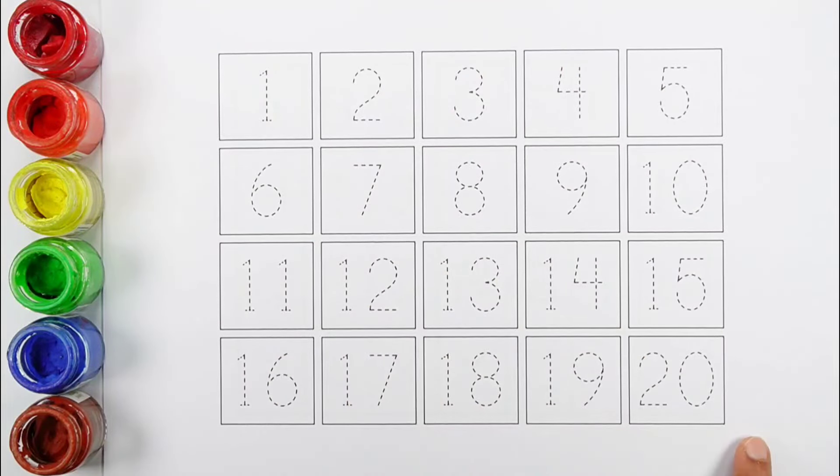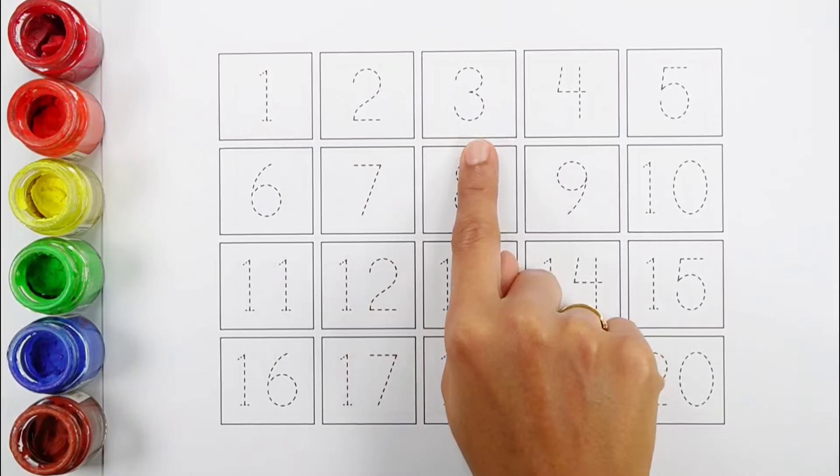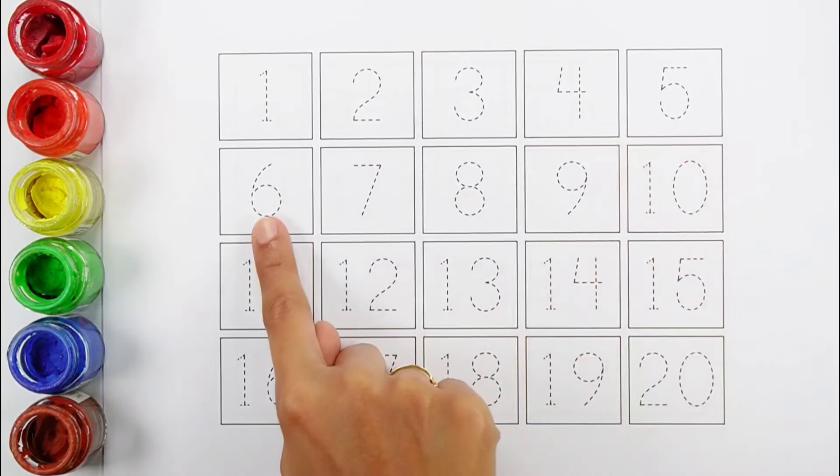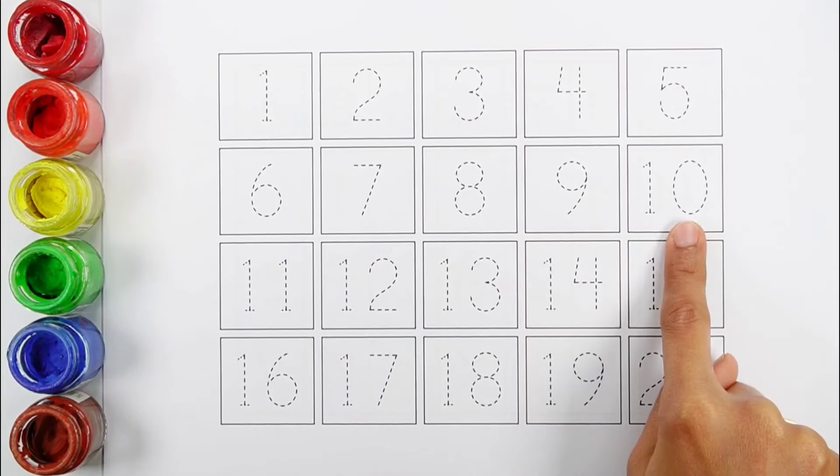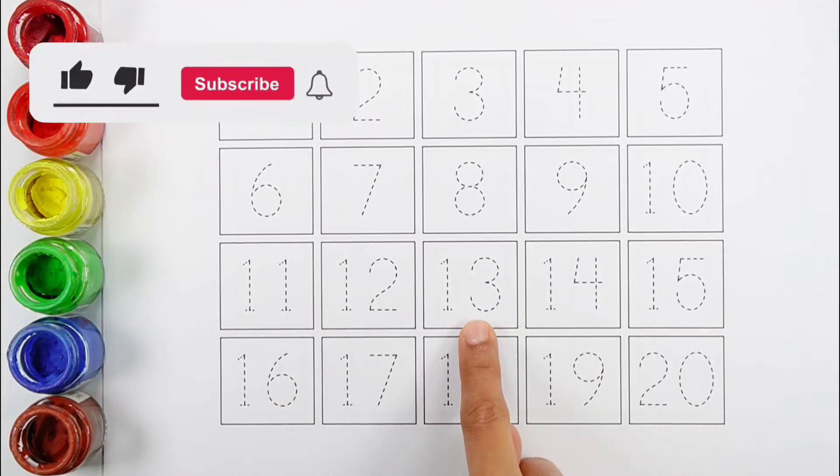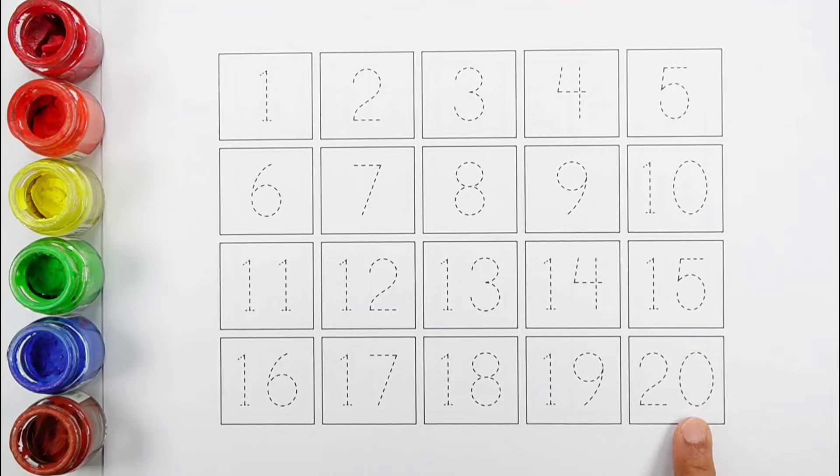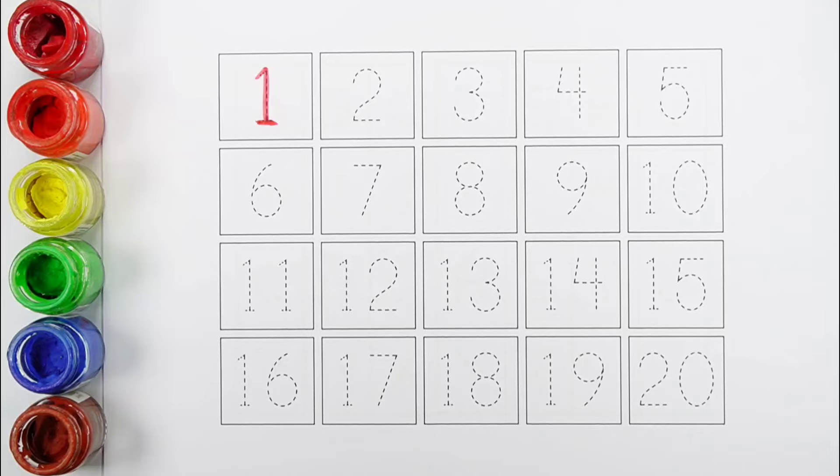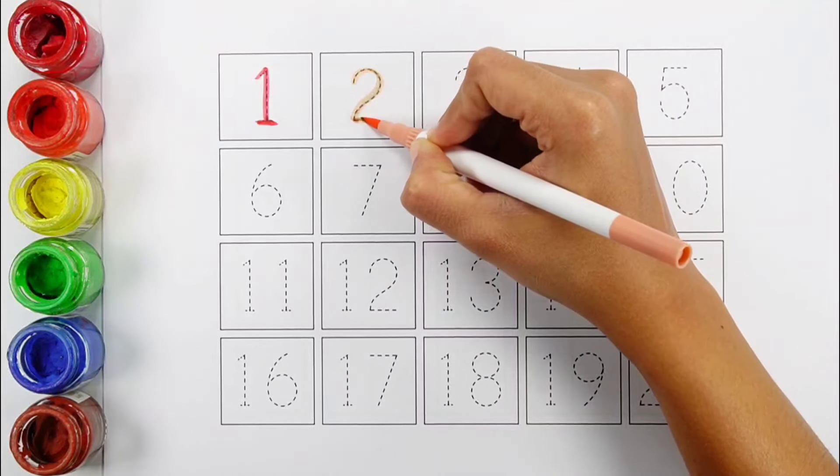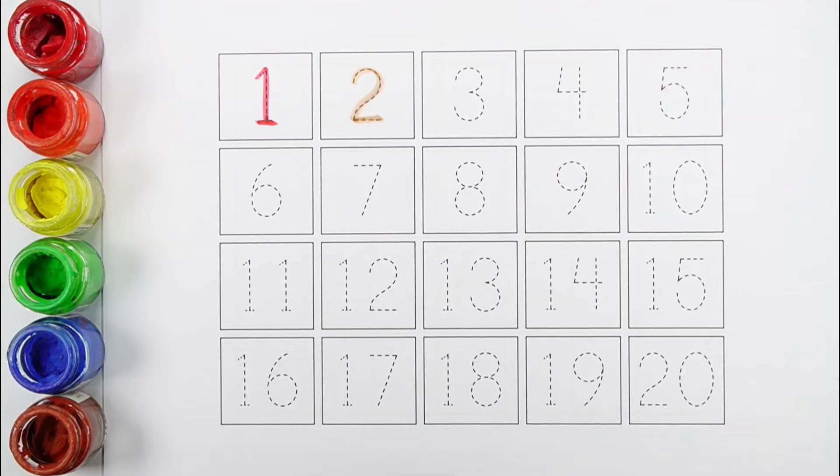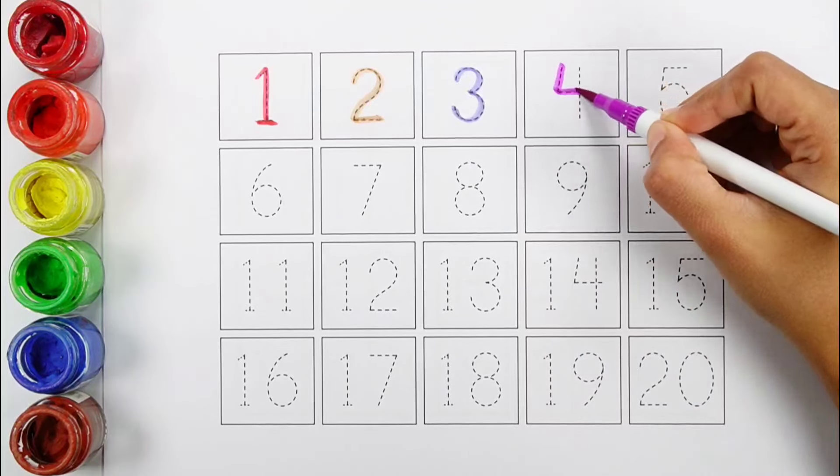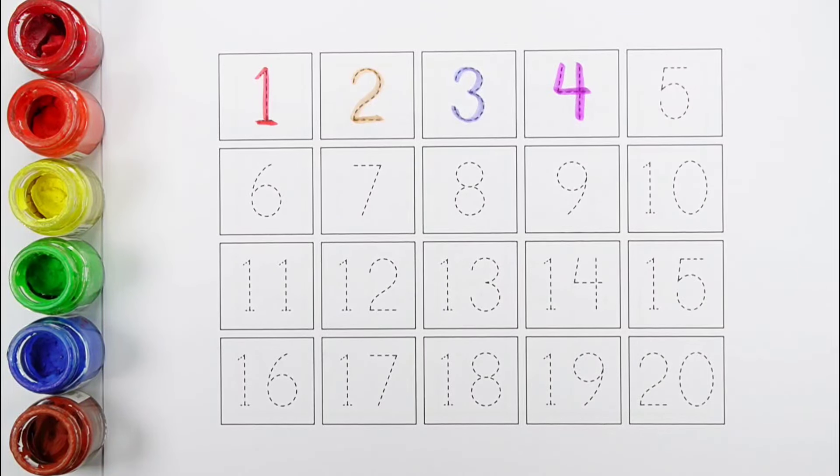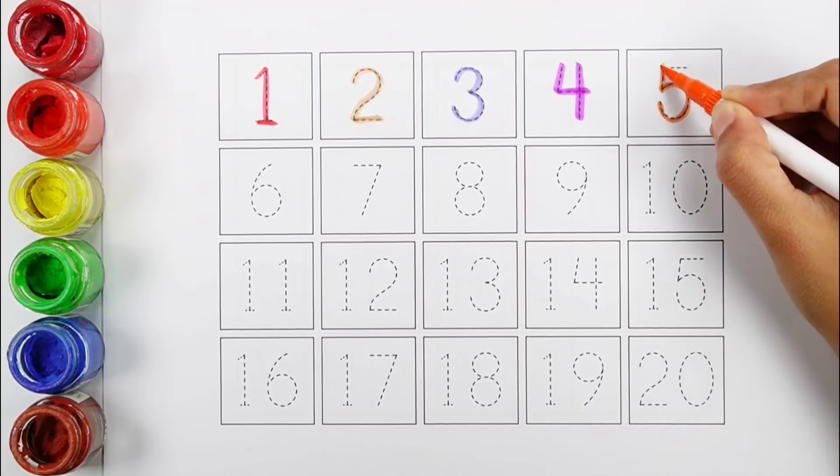Let's learn to count some numbers. 1, 2, 3, 4, 5, 6, 7, 8, 9, 10, 11, 12, 13, 14, 15, 16, 17, 18, 19, 20, 21, 22, 23, 24, 25.